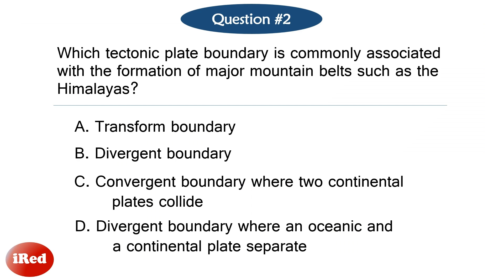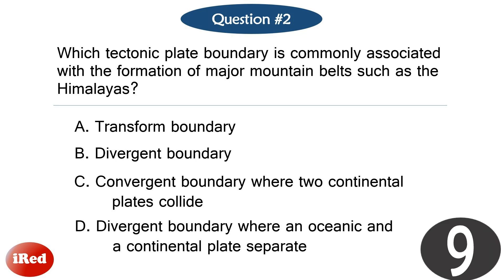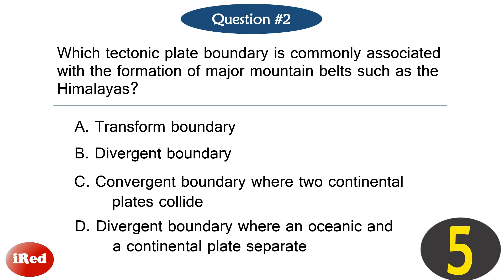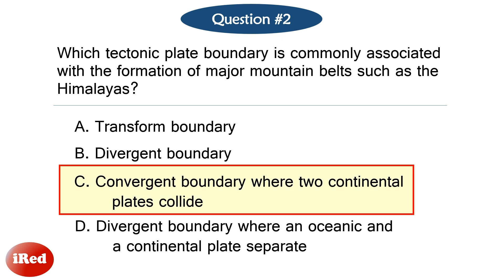Question number two. Which tectonic plate boundary is commonly associated with the formation of major mountain belts such as the Himalayas? The correct answer is letter C: a convergent boundary where two continental plates collide.